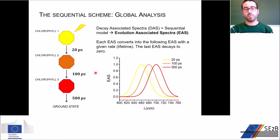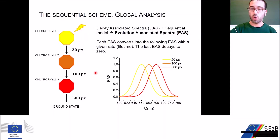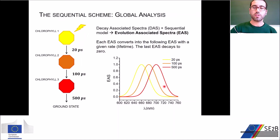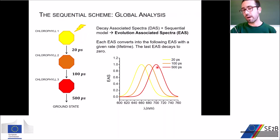We can then come up with a sequential model for our system. According to a sequential model, we have a series of events and species that convert into the next one with a specific rate. Applying this sequential model to our dataset, starting from the global analysis already performed, we end up with three spectra for the three species: a yellow chlorophyll decaying in 20 picoseconds populating the orange chlorophyll, which decays in 100 picoseconds populating the red species, which finally decays to the ground state in 500 picoseconds.